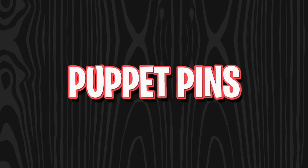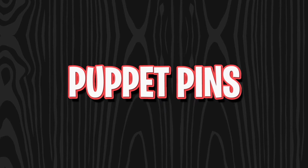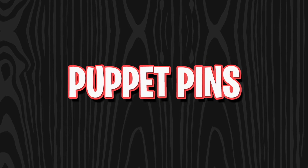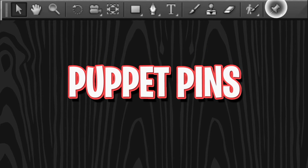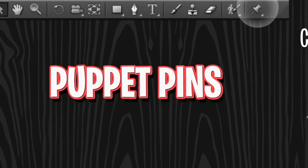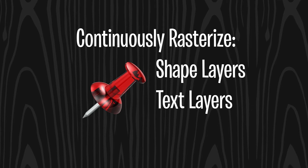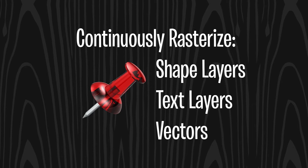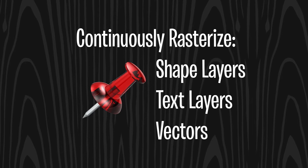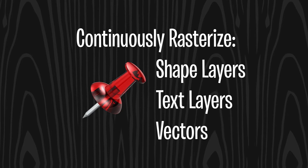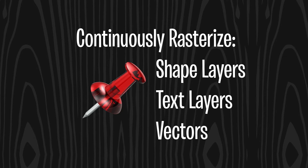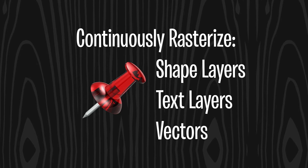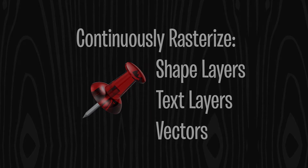We'll start with puppet pins, even though they're technically not in the UI — they're located in the upper menu. If you're working with something that needs continuous rasterization, you'll need to pre-comp it first. Otherwise, you can apply it directly to the layer itself.